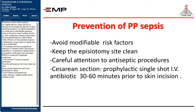Prevention is better than treatment. For vaginal delivery, reduce the risk of infection by shortening the duration of labor, minimizing frequency of vaginal examination, using sterile gloves with antiseptic cream, hand washing/alcohol gel after examination, minimizing episiotomy and instrumental delivery, inducing labor within 48 hours of term premature rupture of membranes, and proper repair of vaginal tears with no hematomas. For cesarean section, give prophylactic antibiotics 30 minutes before skin incision — ampicillin or first-generation cephalosporin, plus postoperative azithromycin for prolonged PROM or suspected Ureaplasma urealyticum. Avoid closure of visceral or parietal peritoneum, close the subcutaneous fat if more than 2 cm thick, ensure proper hemostasis, avoid hematomas by drains, control diabetes perioperatively, and apply antiseptic vaginal betadine before cesarean section.